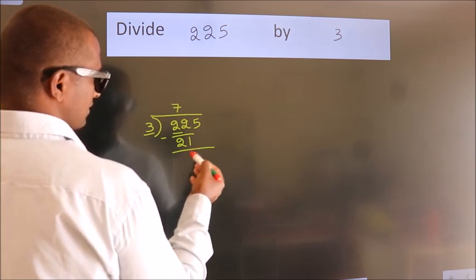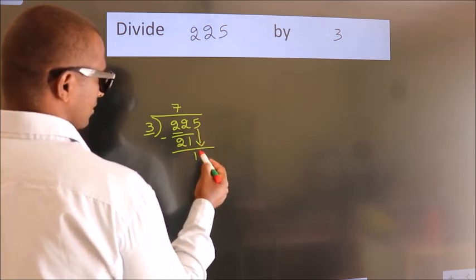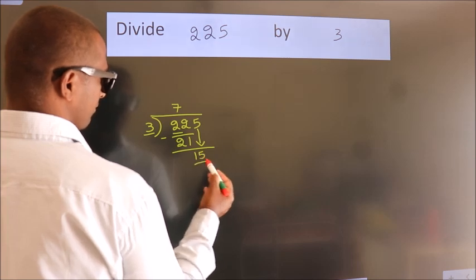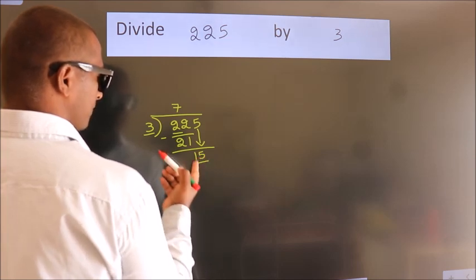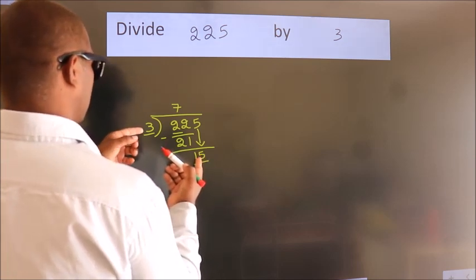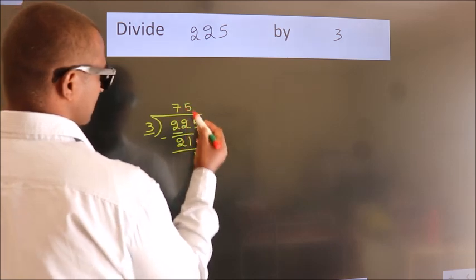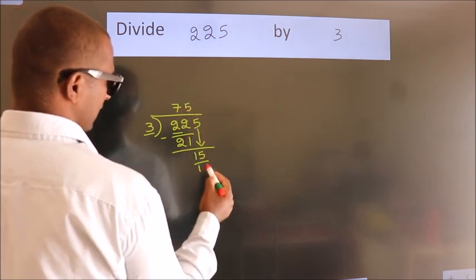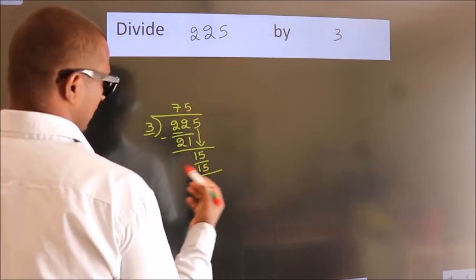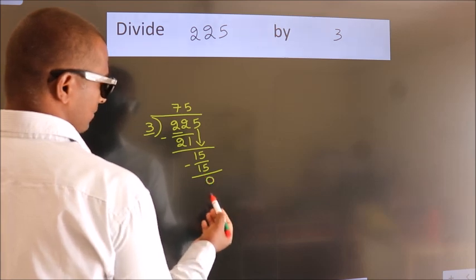After this, bring down the beside number. So, 5 comes down, giving us 15. When do we get 15? In the 3 times table, 3 fives is 15. Now we subtract. We get 0.